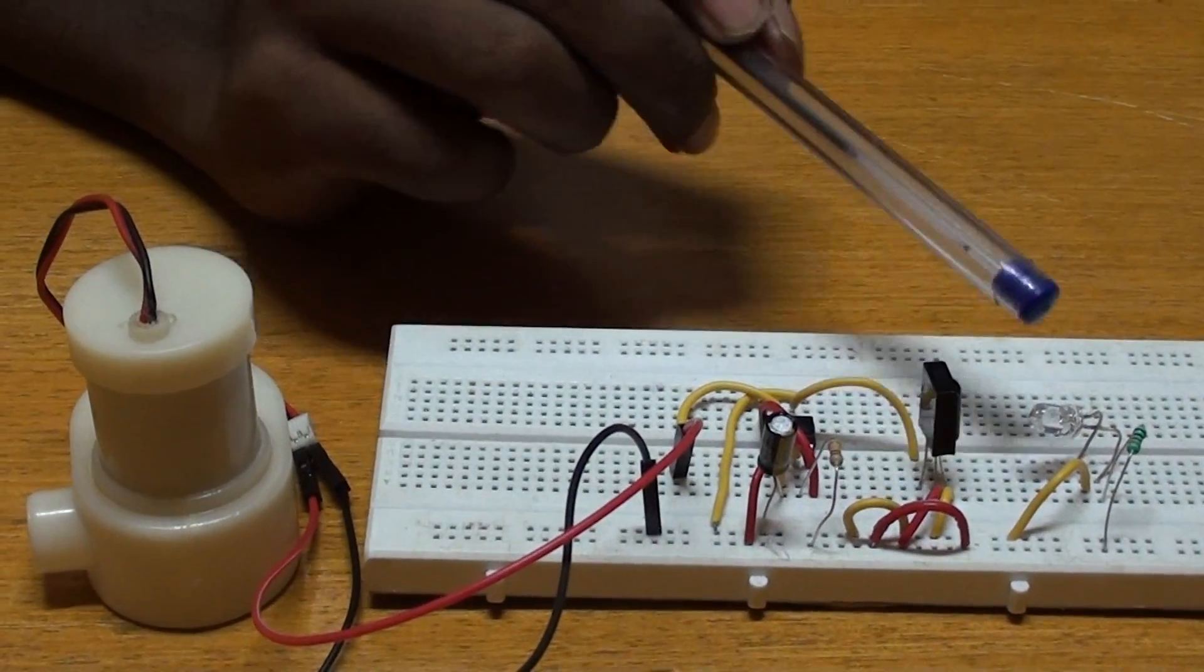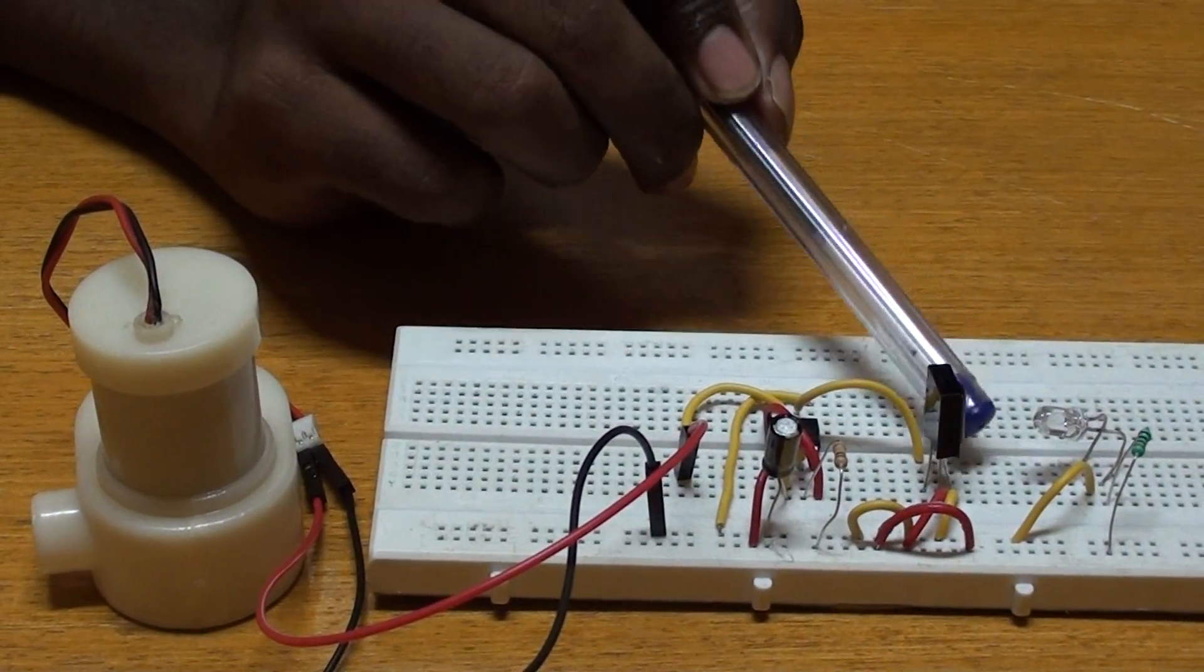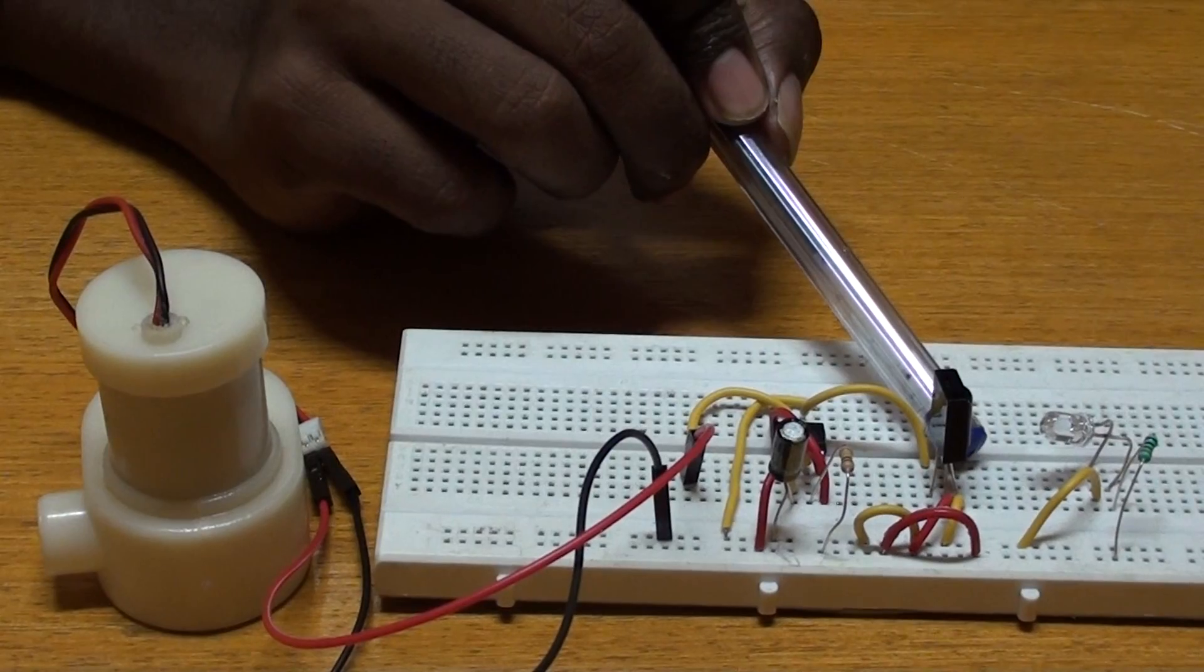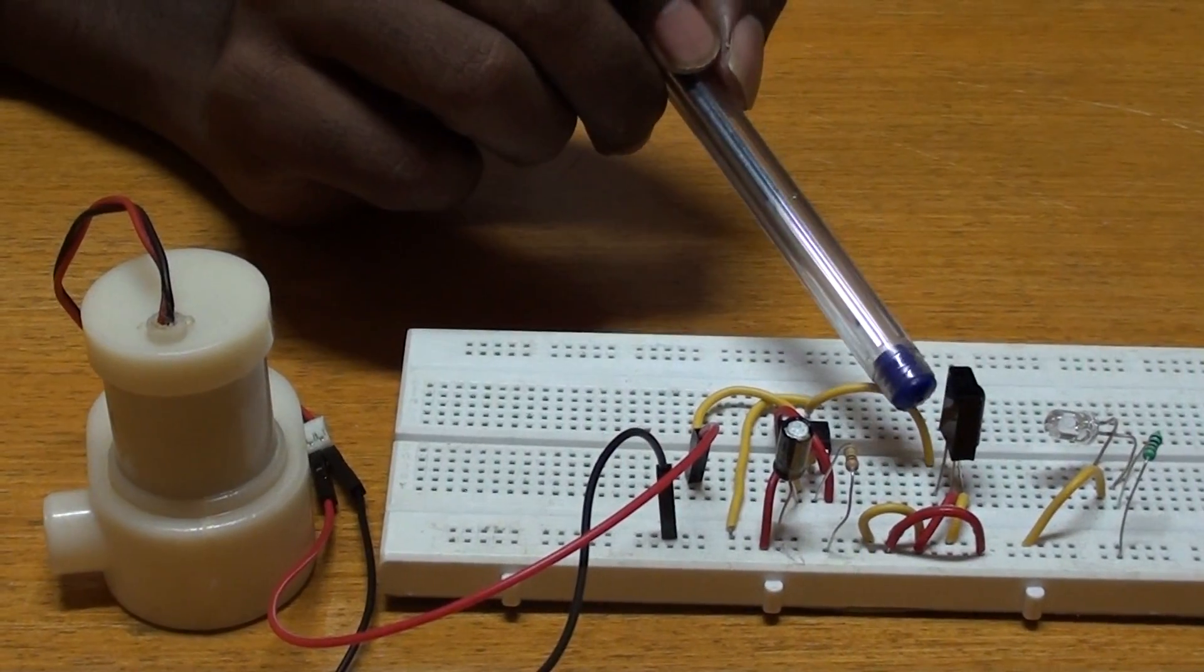Here is the TSOP receiver used to receive the rays from the IR transmitter. The first pin is ground, second pin is VCC, and the third pin is the output.